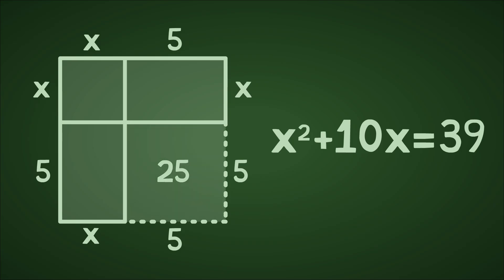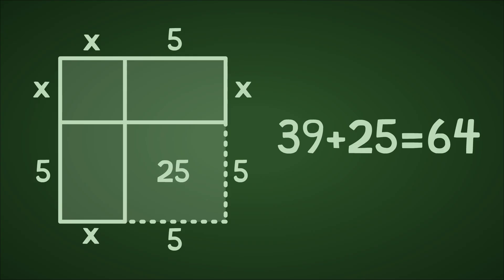So if we were to add that little square in, we would have an area of 39 plus 25, or 64.